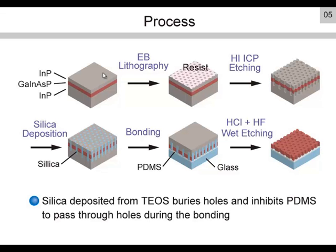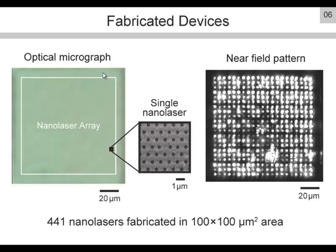This shows the optical micrograph of the fabricated nanolaser array. If you look carefully, you will recognize small dots corresponding to the nanocavities. We integrated an array of 21 by 21 nanolasers in a 100 by 100 square micron area with a 5-micron pitch. This shows the near-field pattern of laser emission from a total of 441 nanolasers, showing lasing of all devices. The emission intensity is not uniform, but all intensities are sufficient for measuring the spectrum and tracking the wavelength. Although non-uniformity of the bonding restricts the practical total size at present, in principle there are no size limitations.